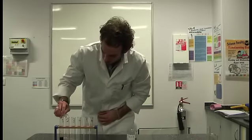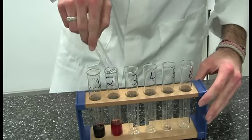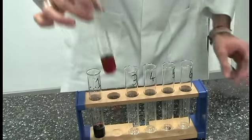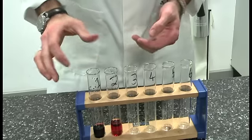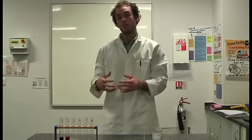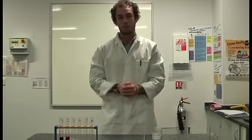Add that to test tube two like so. Give it a quick shake, and well, hey, there you are. You've just made a solution of dilution 10 to the minus one of test tube one.